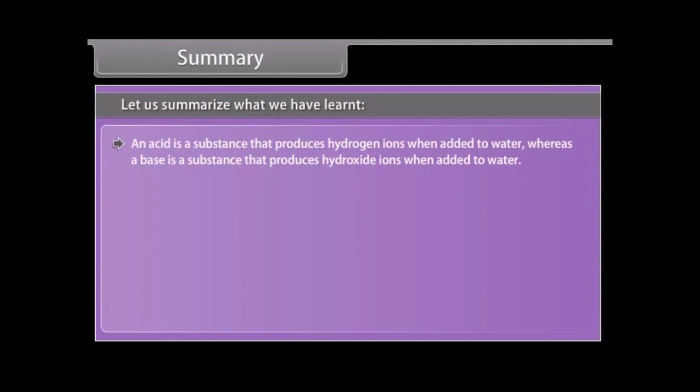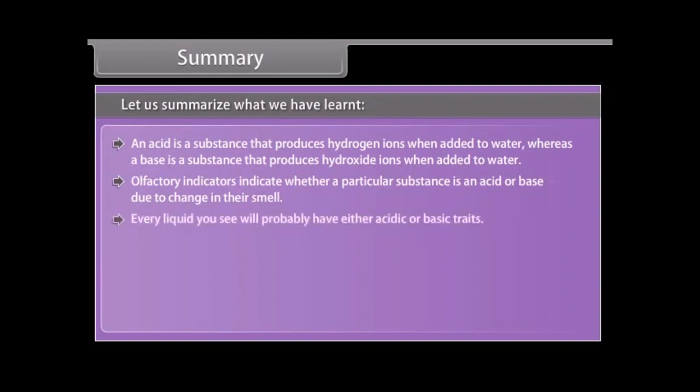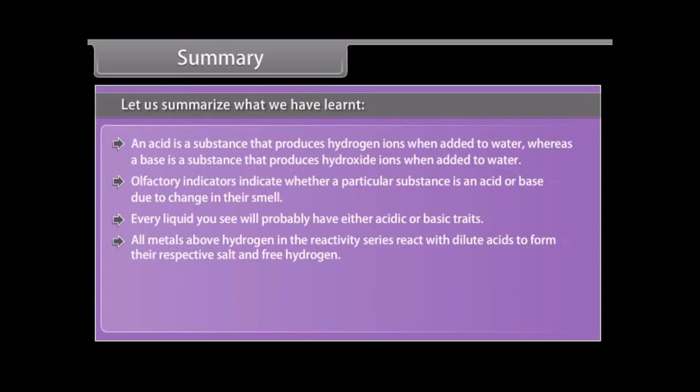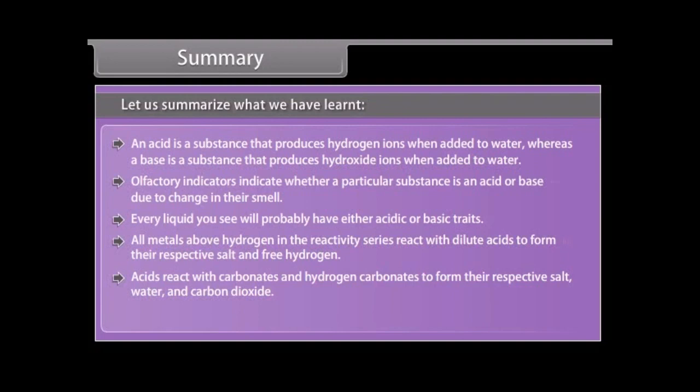Summary. Let us summarize what we have learnt. An acid is a substance that produces hydrogen ions when added to water, whereas a base is a substance that produces hydroxide ions when added to water. Olfactory indicators indicate whether a particular substance is an acid or base due to change in their smell. Every liquid you see will probably have either acidic or basic traits. All metals above hydrogen in the reactivity series react with dilute acids to form their respective salt and free hydrogen. Acids react with carbonates and hydrogen carbonates to form their respective salt, water and carbon dioxide. Acids and bases are the chemical opposites of each other.